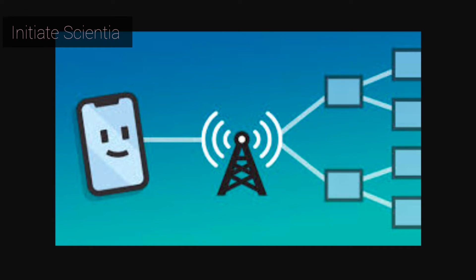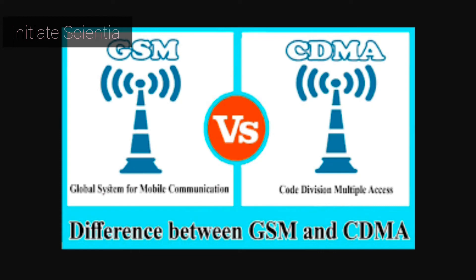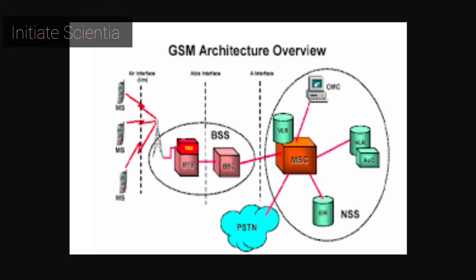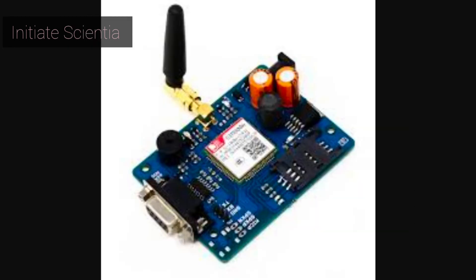The NSS has a variety of parts including mobile switching center and home location register. These components perform different functions such as routing calls and short message services, SMS, and authenticating and storing caller account information via SIM cards.